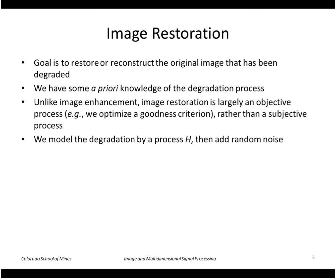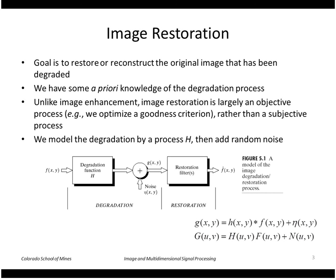We model the degradation process by a function h and then add random noise. In the block diagram: f is the original image, h is the degradation function. That degraded image is then corrupted further by adding noise, producing our degraded image g. We take g and attempt to restore it using one of the methods described, hopefully getting back an approximated version of the original function f. The degradation is described as a convolution of h with the original image f, then adding the random noise eta.